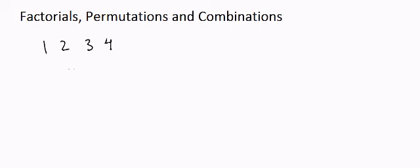Suppose we have four students — student 1, student 2, student 3, and student 4 — and we want them to take a seat. We have four seats: 1, 2, 3, and 4, and the students want to sit on the seats. So how can we possibly make them sit on these four seats?